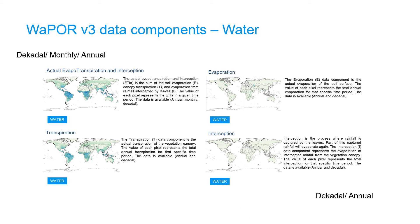The four water data components are the same as in version 2, including evaporation, transpiration, interception, and the sum of the three — actual evapotranspiration and interception. All data is available at decadal and annual time steps, whereas the actual evapotranspiration and interception is also available at monthly time steps.